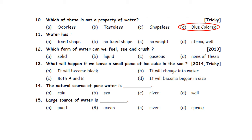Question eleven: Water has — A. Fixed shape. B. No fixed shape. C. No weight. D. Strong smell. Water has no fixed shape. It will take the shape of the container in which water is poured. So option B — water has no fixed shape — is the correct answer.